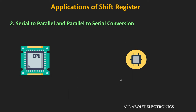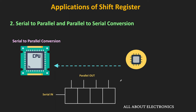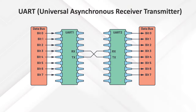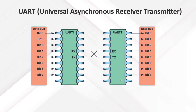Similarly, at the receiver end, once the serial data is received, it needs to be converted into parallel form for parallel processing. With the help of the Serial In Parallel Out type of shift register, we can convert serial data into parallel form. So the Serial In Parallel Out and the Parallel In Serial Out types of shift registers are essential for Serial to Parallel as well as Parallel to Serial Conversion. All devices have dedicated internal hardware for this, and UART is the most commonly used hardware protocol for the same. Internally, UART uses shift registers for Serial to Parallel as well as Parallel to Serial Conversion.